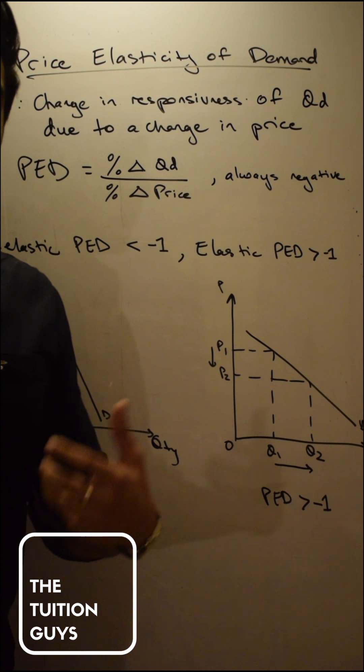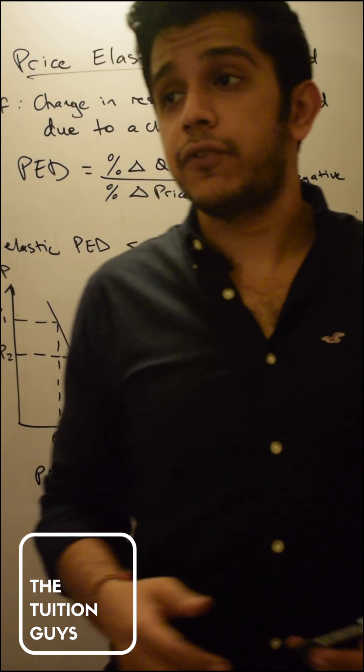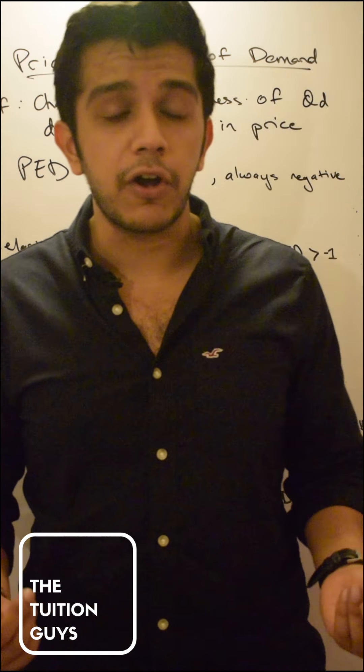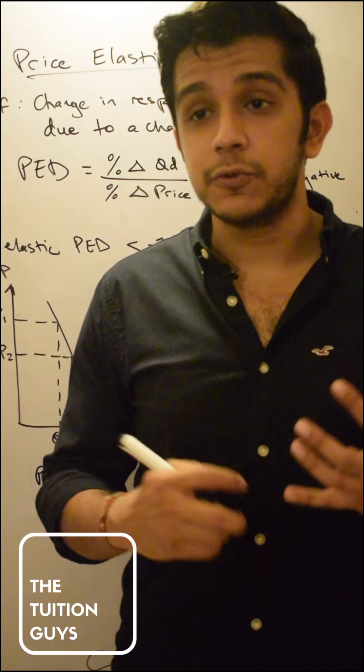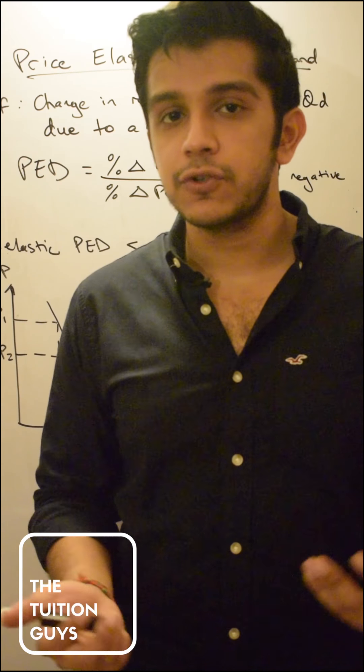Inelastic goods are going to be those goods which are necessities, which are habit forming, or which basically we can't live without. So for example, we need milk, we need water. So that means those are goods which are going to be relatively inelastic or extremely inelastic. If there's no water, I know I for sure will die.